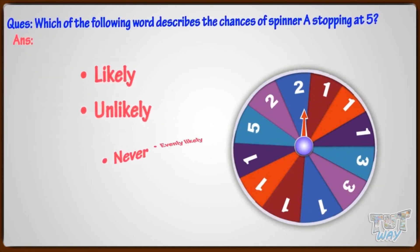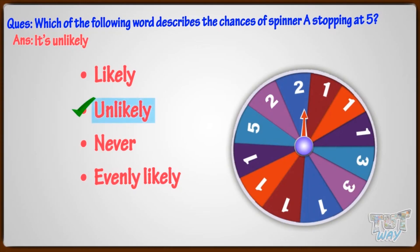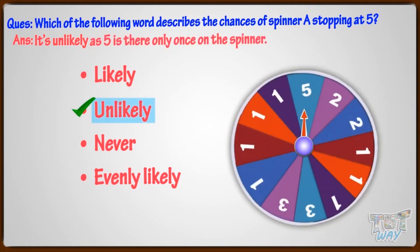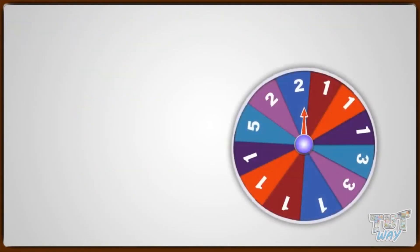Which of the following words describes the chances of spinner A stopping at 5? Likely, unlikely, never, evenly likely. It's unlikely, as 5 is there only once on the spinner. Now, let's move to the next question.